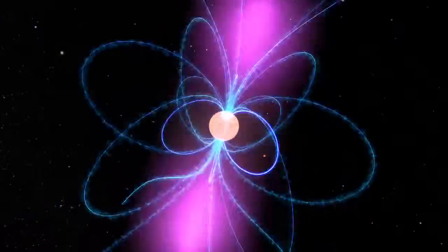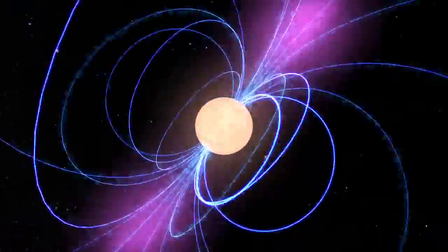Neutron stars spin between 7 and 40,000 times a minute and form with incredibly strong magnetic fields.